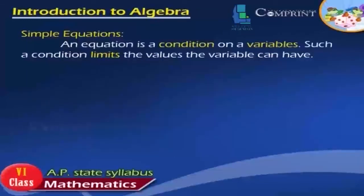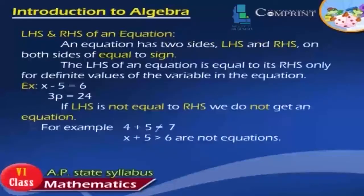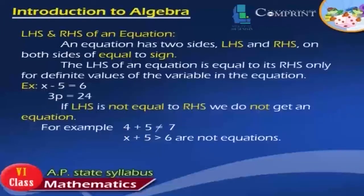Simple Equations. An equation is a condition on a variable. Such a condition limits the values the variable can have. An equation has two sides — LHS and RHS — on both sides of the equals sign. The LHS of an equation is equal to its RHS only for definite values of the variable. Examples: x − 5 = 6, and 3p = 24. If LHS is not equal to RHS, we do not get an equation. For example, 4 + 5 ≠ 7, and x + 5 > 6 are not equations.